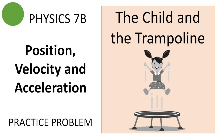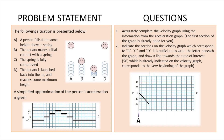Hello everybody, welcome back to our channel. In today's episode we're going to be solving a physics 7b position, velocity and acceleration practice problem — the child and the trampoline. If you're finding this content helpful please make sure to leave a like, it helps this channel a lot. So let's go ahead and read the problem.